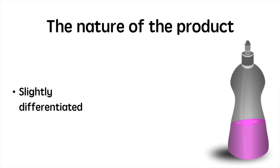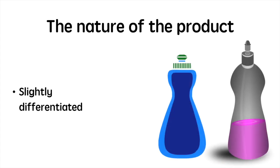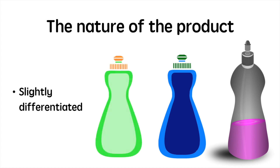Monopolistic competition falls under the category of imperfect competition. This is because the products in a monopolistically competitive market are slightly differentiated. They can differ by size, brand, quality, design or other distinguishing features. A great example of this would be the market for dishwashing liquid. There are many different brands to choose from and they are all slightly different. Firms also produce different quality dishwashing soap. Some differences are perceived by consumers while others are genuine.